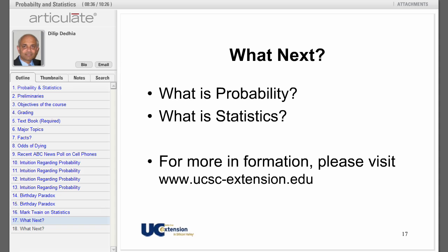What is probability and what is statistics? A statistic is a fact or a piece of information expressed as a number or percentage. The facts and figures collected and examined for information on a given subject are statistics. Probability is the likelihood of something happening or being true.